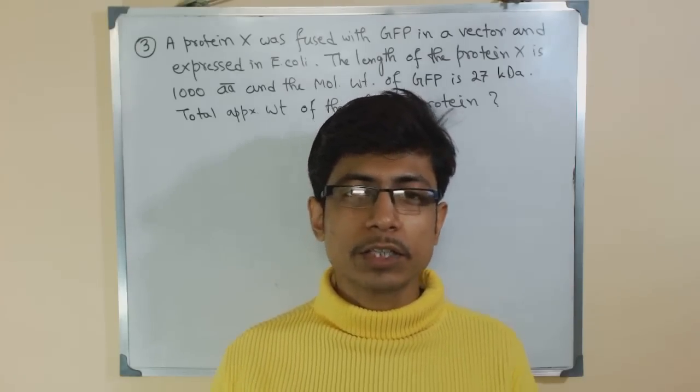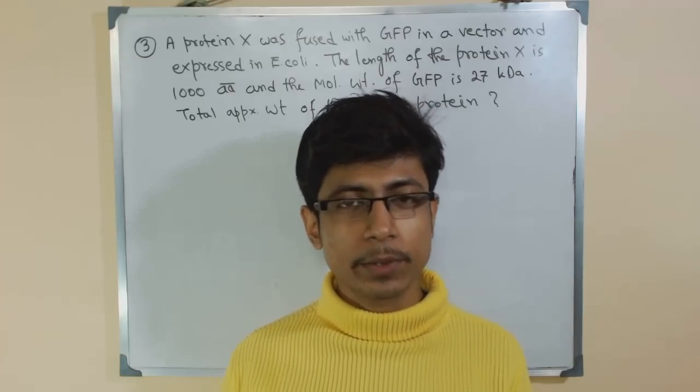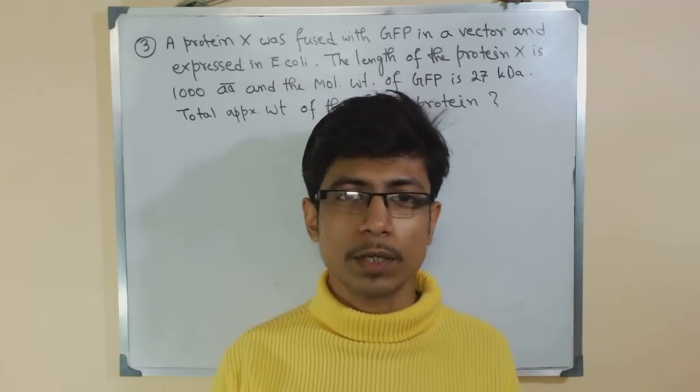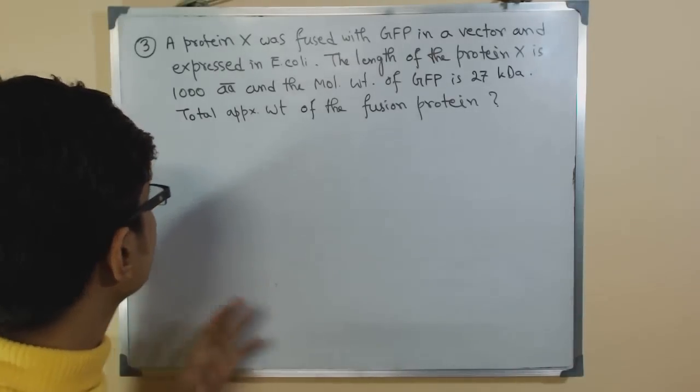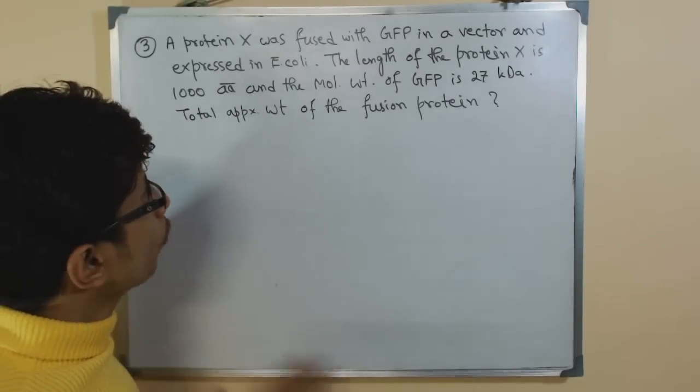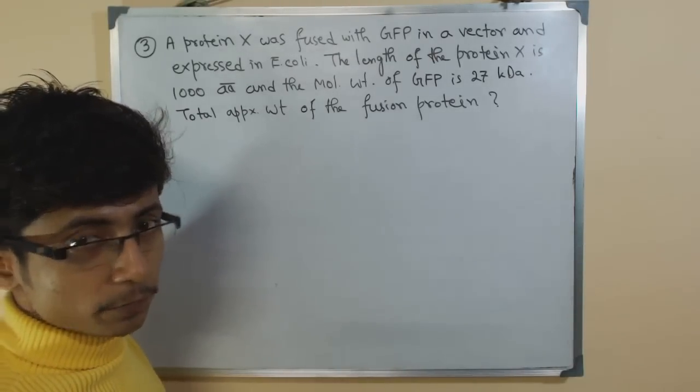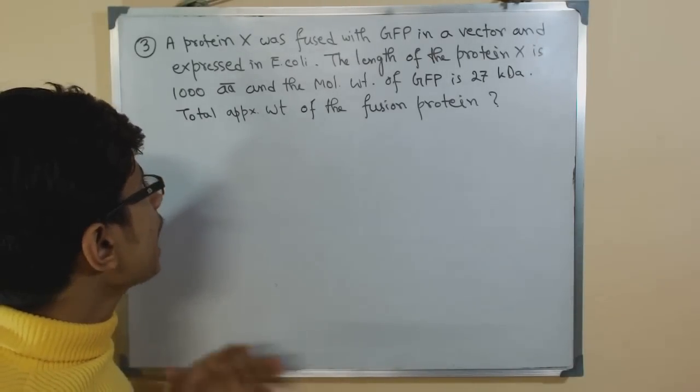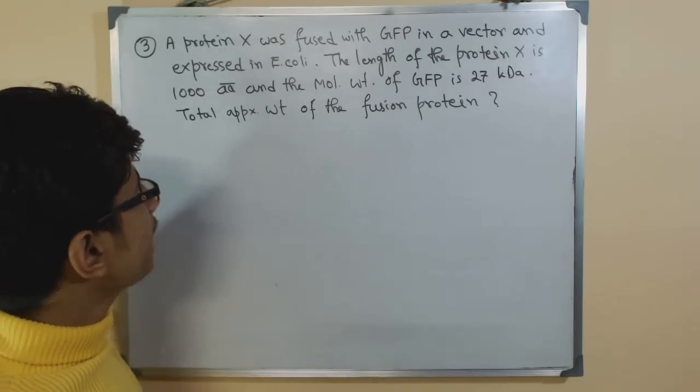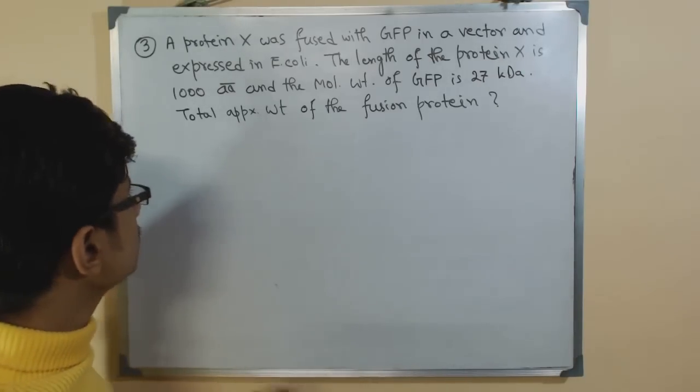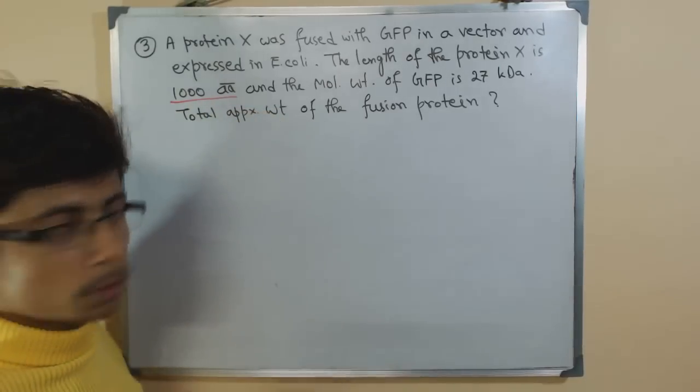Welcome again guys, biology with math, and here we go for another question from protein problems. In this case, the question is: a protein X was fused with GFP green fluorescent protein in a vector and expressed in E. coli system. The length of the protein X is 1000 amino acids, that is something to be noted.